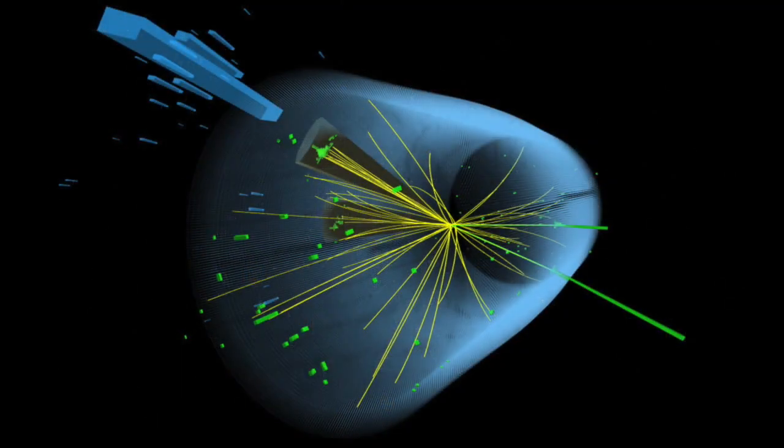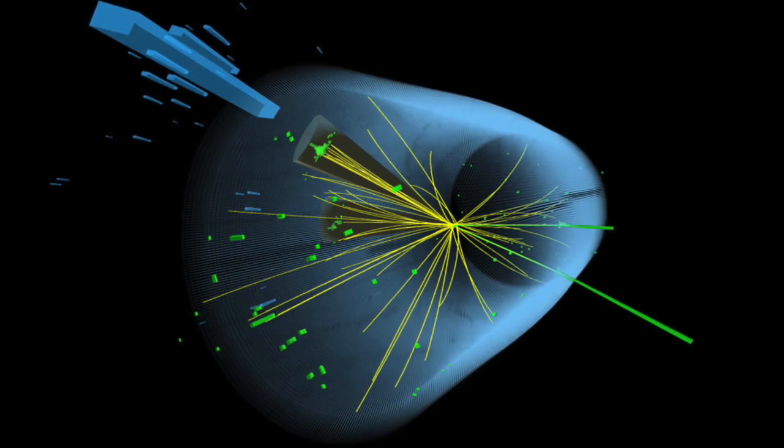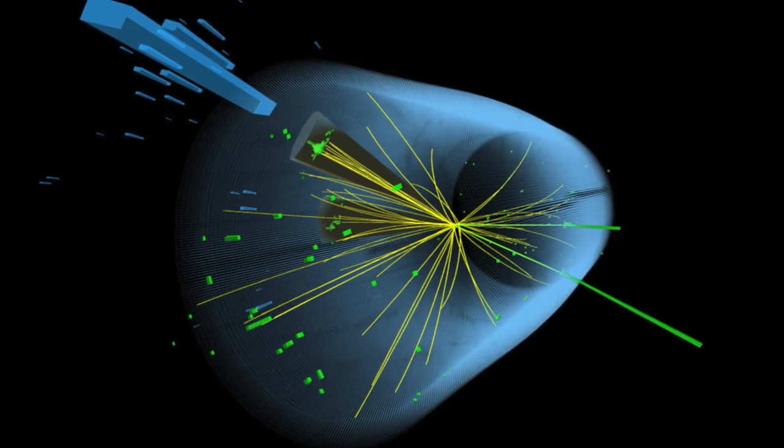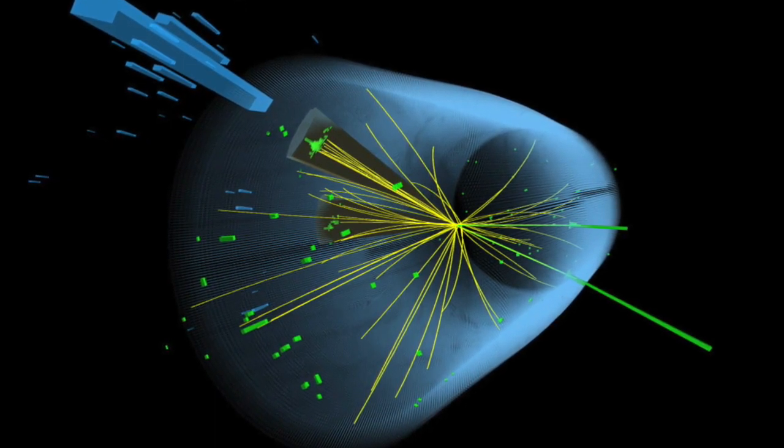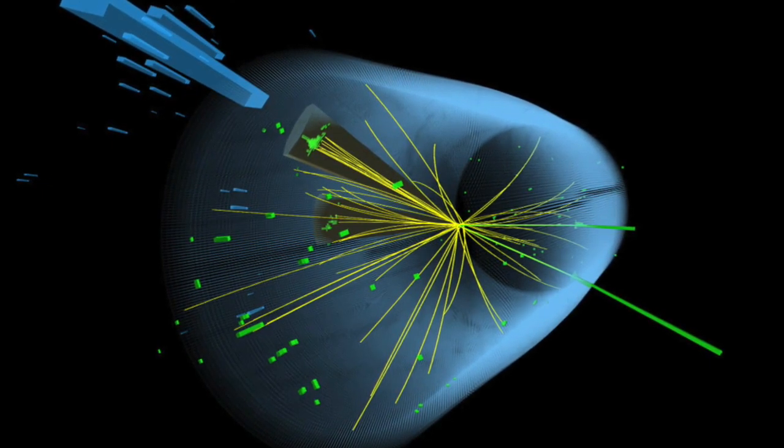The Higgs boson, too, popped out of the maths 48 years before it was finally detected by an experiment at the Large Hadron Collider. Somehow, knowledge of the Higgs was contained in the equations that described it decades before it was manufactured and observed in physical reality.